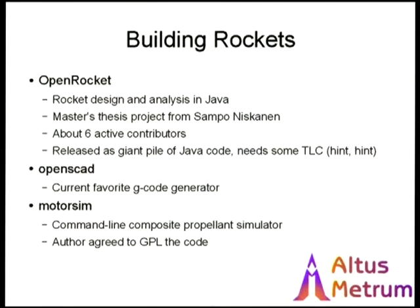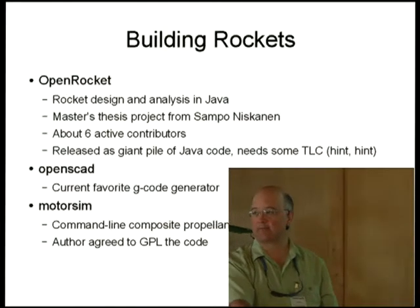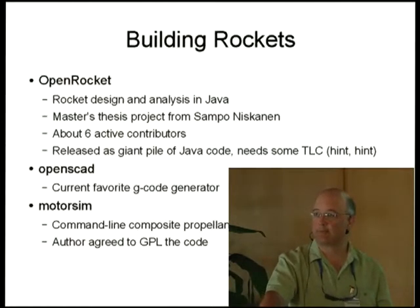As you might imagine, it's a lot more complicated to build a giant rocket, so we like to do a little aerodynamic analysis. In Debian, there's a package called OpenRocket — you can install it from the archive today. It's a rocket design and analysis system written by a master's student from Finland named Sampo Niskanen. He built a little Java program that lets you design rockets, with the fluid dynamics necessary to compute the drag on the airframe and the effects of Mach-speed air flowing over the fins and the nose cone.